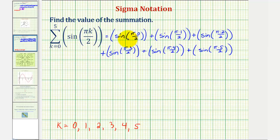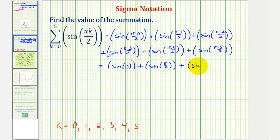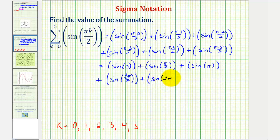So let's first simplify our angles, then we'll determine the sine function values. This gives us sine zero, plus sine pi over two, plus sine pi, plus sine three pi over two, plus sine of four pi over two which is just sine two pi, and finally sine five pi over two.